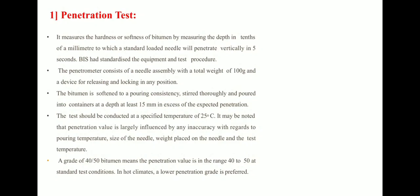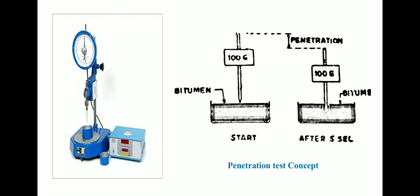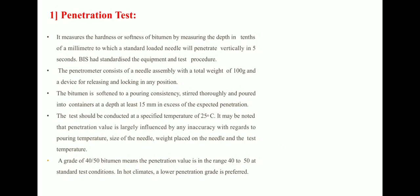The first test is the penetration test. This is the apparatus used for measuring the penetration of bitumen. The second figure shows the position at the start and after five seconds, so we simply find the difference. The penetrometer consists of a needle assembly with a total weight of 100 grams and a device for releasing and locking it in any position.